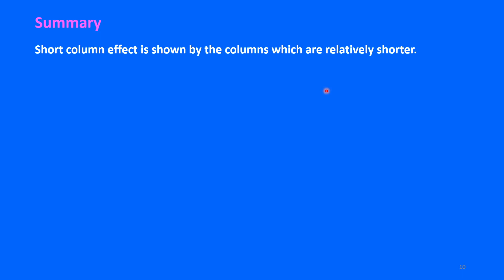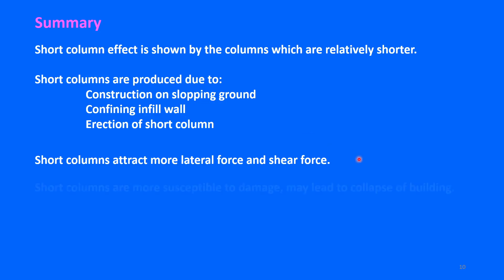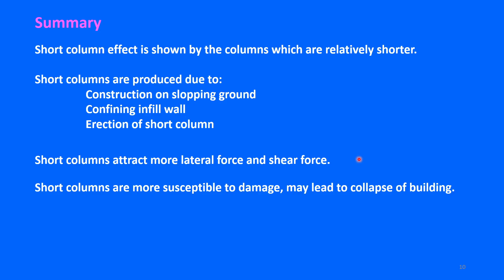In summary: the short column effect is exhibited by columns that are relatively shorter in length compared to columns in their surroundings. Short columns arise due to construction on sloping ground, confining infill walls, or intentional erection of a short column. Short columns attract more lateral force and shear force, making them more susceptible to damage and potential building collapse. To eliminate the short column effect, simply avoid creating short columns — avoid building on slopes without mitigation, avoid partial infill confinement, and avoid intentionally providing short columns.